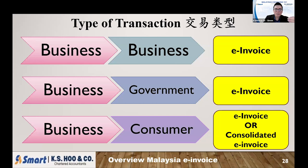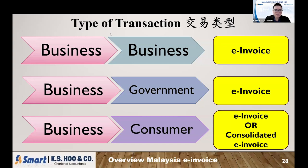Number four: type of transaction. Normally when you do business, your customer will be businesses like a company — that is B2B. Your customer may also be from the government, or from the consumer end user side. So what is the e-invoice requirement? If your customer is doing business and you also do business, you must issue e-invoice to them — no other invoices, only e-invoices.